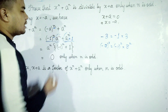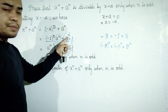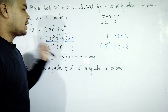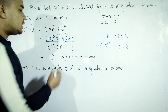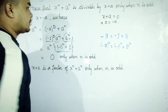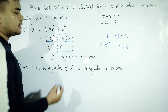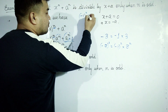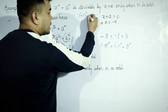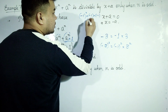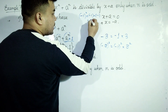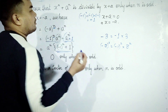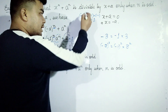We consider minus 1 to the power n plus a to the power n. When we evaluate minus 1 to the power n, for example minus 1 whole squared equals minus 1 times minus 1, which gives positive 1. So when n is even, minus 1 to the power n equals 1.